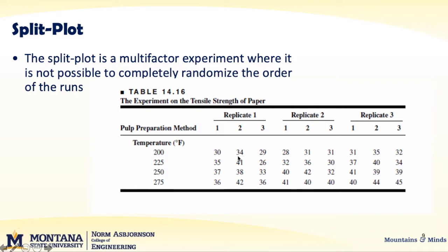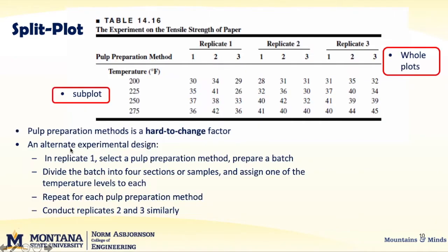What we see here is that for this sample — this value of 41 — we haven't just randomly chosen pulp prep method two at 225. Rather, we're only randomizing by the temperature. As we've seen before with blocking, when we decide to change our randomization, we have the same situation here. We call these our whole plots. The whole plots are the hard-to-change factors. The subplots are the easy-to-change factors. The reason we call it split plot or whole plots is because this comes directly from agriculture.